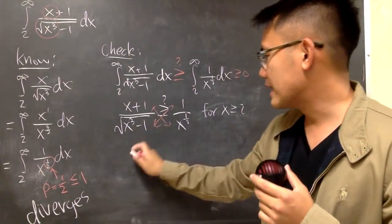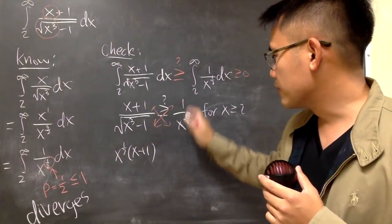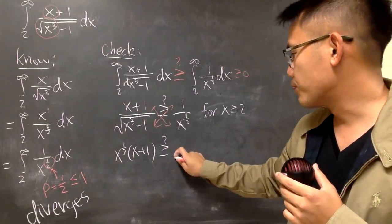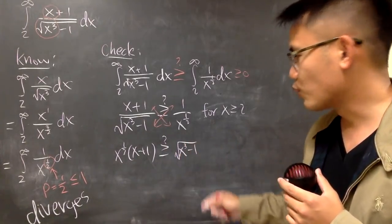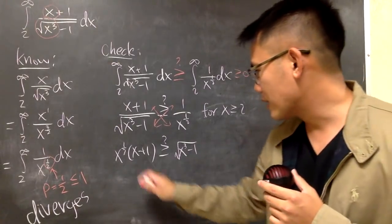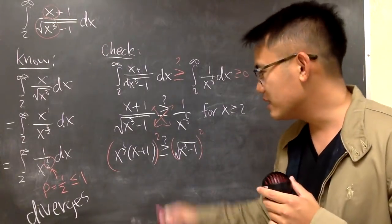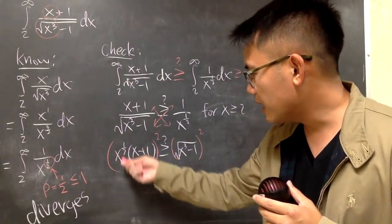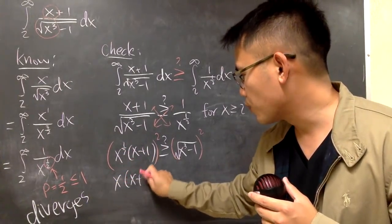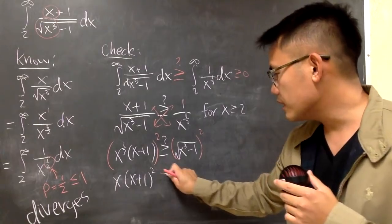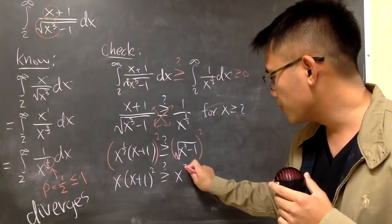Let me just do this times that, which is x to the one-half times x plus 1. Multiply this and that. I don't know yet, so I'll put on a question mark. Then we have the x cubed minus 1. Well, I have the square root. I don't like that. Perhaps I'll square both sides. You see, distributed power, in this case you get x to the first, and then you have x plus 1 squared. Is this greater than or equal to? Cancel this out. x cubed minus 1.